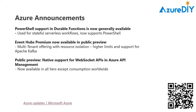PowerShell support in durable functions is now generally available, which is fantastic. For anyone that doesn't know, durable functions — when you're talking about serverless functions — is generally the way to go with Azure, and durable is when you're using stateful serverless workflows. Event Hub Premium is now available in public preview. This is for multi-tenant offerings with resource isolation, has a bunch of higher limits, and a lot of support for Kafka.